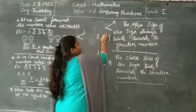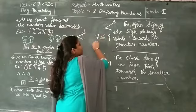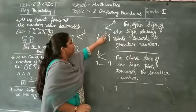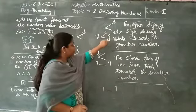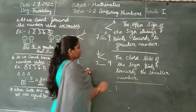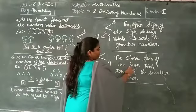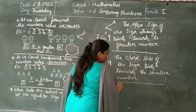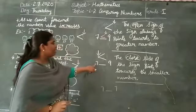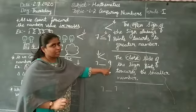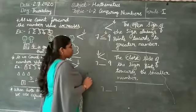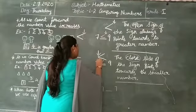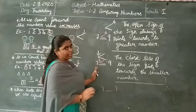For example, 9 is greater than 7. So the open sign is indicating towards 9. At the same time, the close side of the sign points towards the smaller number. You can see here — 7 less than 9. 7 is smaller, so the close point is pointing towards 7.